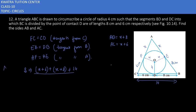The semi-perimeter is the sum of all sides divided by 2. So we have x plus 6 plus x plus 8 plus 14, which gives 2x plus 28, divided by 2. Taking 2 as common, s equals x plus 14 centimeters.